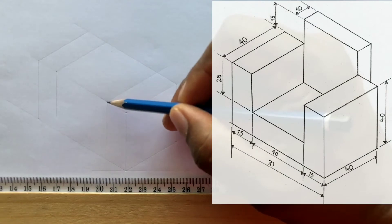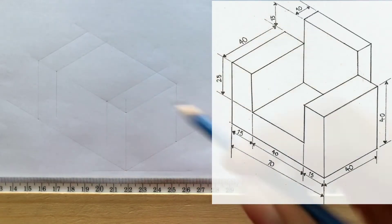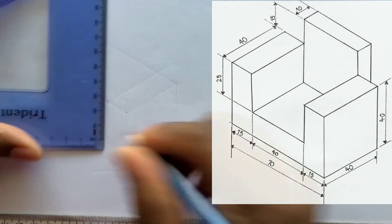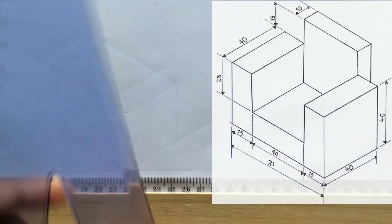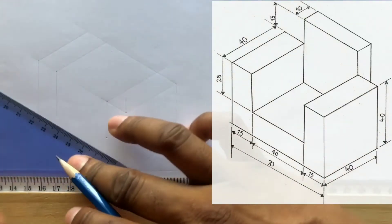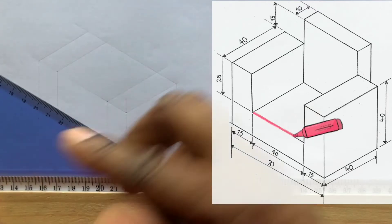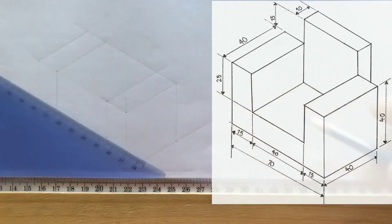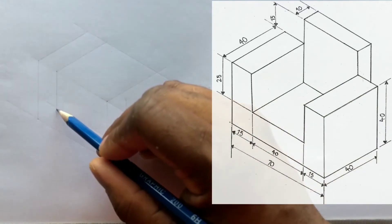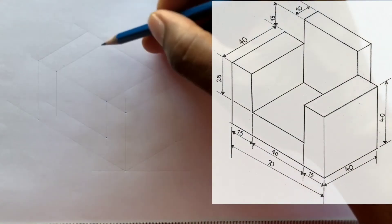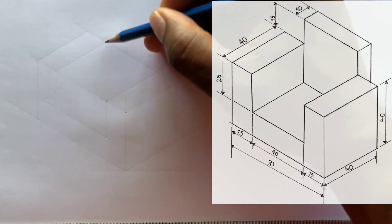Now measure 25mm from this point on this line. Now draw a horizontal line from the previous point you identified. Now from this intersection, you will draw a horizontal line in this direction. And also from this intersection, you will draw a vertical line in this direction.